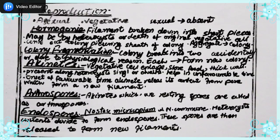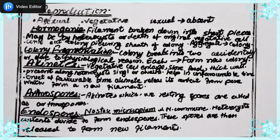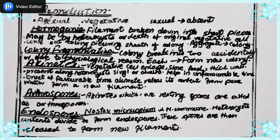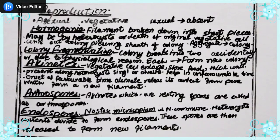The second method is colony formation. One colony is broken down into pieces — either accidentally or due to some physiological reasons such as death or wall formation. Each piece forms a new colony as new filaments aggregate. In this way, one colony gives rise to another colony, whereas in hormogonia, one filament fragment gives rise to another filament.